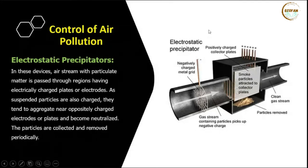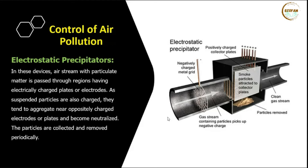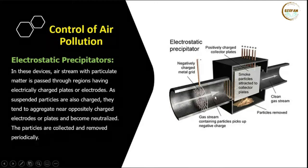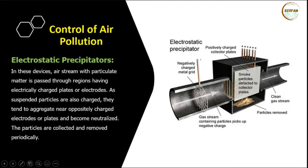Electrostatic precipitators are based on the principle that particulate matter has a charged property — it can be negatively or positively charged. In a chamber, plates are positively and negatively charged. When gas with particulate matter passes through, particles are attracted towards the opposite charge and stick to those plates. For example, negatively charged particulate matter sticks to the positive plate, cleaning the air. Later the charged particles are neutralized and particulate matter is collected from the bottom of the plates.